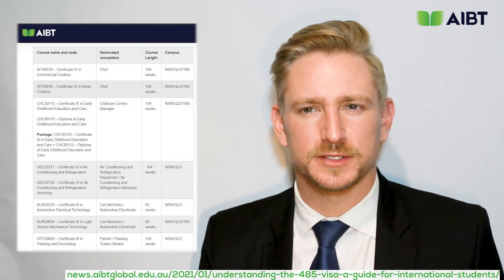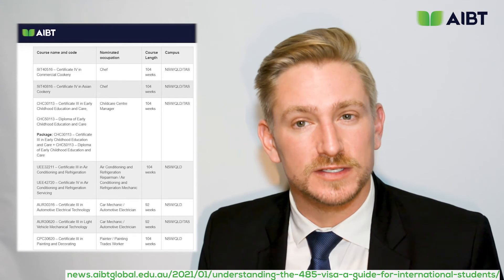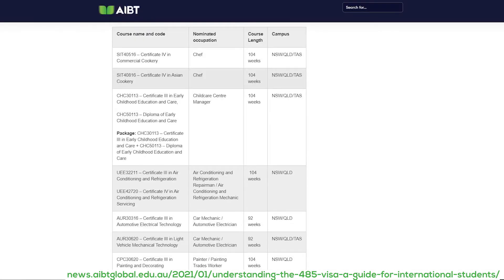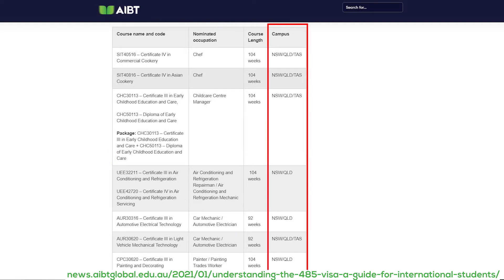Students have asked: how can I confirm that my chosen career course and occupation meet the needs of the temporary work visa for 485 graduates? As an example, AIBT has compiled a list of current medium and long-term occupations with corresponding courses, their duration, and the available locations that can be used to apply for a 485 visa in the future. The course name and code is on the left, followed by the nominated occupation, course length, and campus.